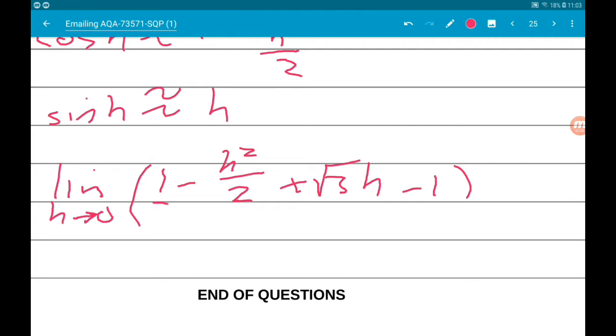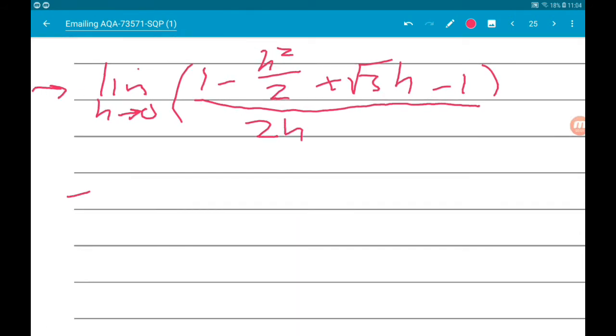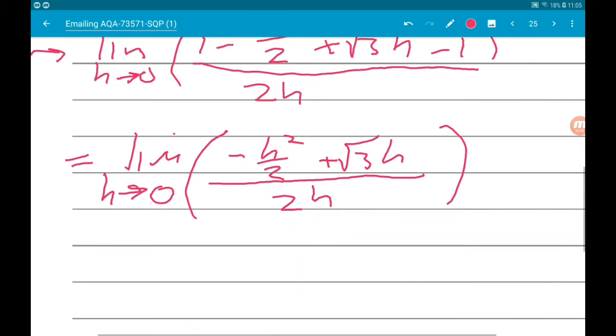Okay, I've run out of room. Classic. Okay, so this is now equal to the limit as h tends to zero of, well, up on top we've got one minus one, so they're going to cancel out. That's good. So we got minus h squared over two plus root three h, all over two h.